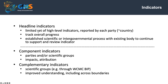The headline indicators in particular are a limited set of high-level indicators reported by each party. This is what makes them very powerful — they will be reported by each party rather than by international groups of experts working independently. They can only track the overall progress against the goals and targets, and they need to be based on established scientific or intergovernmental processes with an existing body to support and review the indicator. Component indicators and complementary indicators are also very important in providing context of how the targets and goals are processing, including how we attribute changes and understand how these different targets and goals work together.